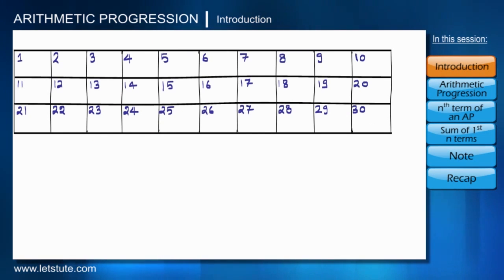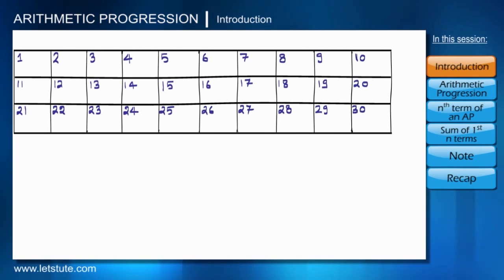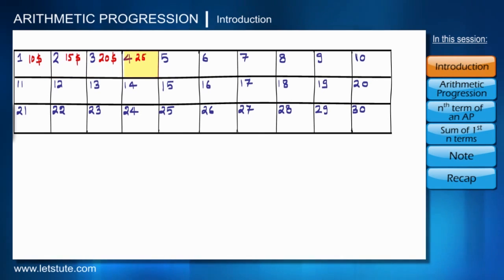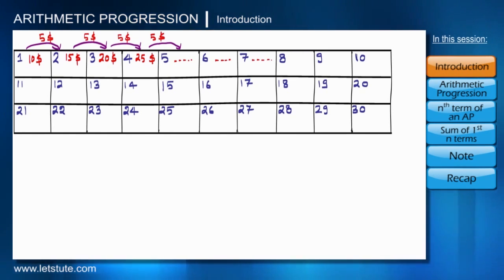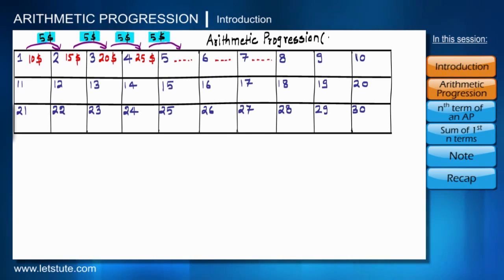Consider this example: I have a new project to complete within 30 days. The mode of payment is: on day one I get $10, on day two $15, on day three $20, on day four $25, and so on — each day's payment is incremented by $5. You can consider this table as the month of November. Since every number is increased by a constant $5, this kind of pattern is called Arithmetic Progression, or AP.